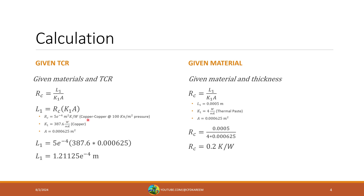For example, the thermal contact resistance between copper and copper at a contact pressure of 100 kilonewtons per meter squared is roughly 5e-4 m²·K/W. The thermal conductivity of copper is 387.6 W/(m·K), and the area in contact is 0.000625 m². Plugging those into our equation gives us our equivalent length that we then input into Fluent.